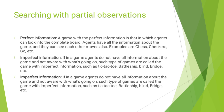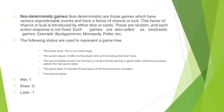Imperfect Information: If in a game, agents do not have all information about the game and are not aware of what is going on, such type of games is called a game with Imperfect Information, such as Tic Tac, Bottle Ship, Blind and Bridge, etc. Non-Deterministic Games are those games which have various unpredictable events and have a factor of chance or luck. This factor of chance or luck is introduced by either dice or card. These are random and each action response is not fixed. Such games are called Stochastic Games.